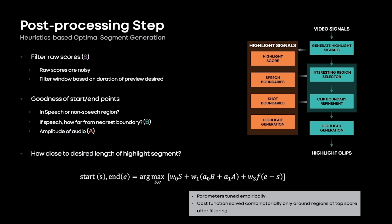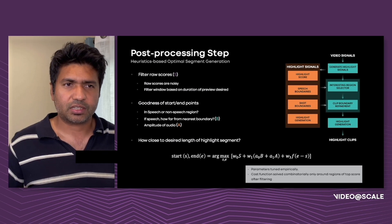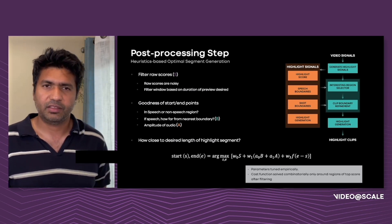We also check speech and shot boundaries to make the start and end regions less abrupt. However, this may not always be possible given the target duration of the preview. So we cast the post-processing step as an optimization problem, where we want to obtain a pair of start and end timestamps that maximize a cost function. Our cost function uses a goodness-of-start and stop regions, taking into account how far the stop and start regions are from speech boundaries, what the audio amplitudes are at those regions, what the average highlight score is for the selected region, and how close the selected clip is to the desired preview duration. We add weights to each of these constraints based on empirical tuning.